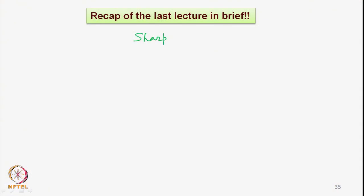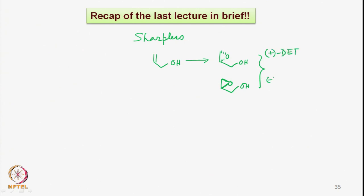We looked at how the mnemonic device allows the allylic alcohol to be oriented in a particular fashion. Depending on whether it is L-plus DET or D-minus DET, we can get the corresponding epoxides and their orientation or stereochemistry. These are two epoxy alcohols that can form: this one based on plus-DET, that is diethyl tartrate, and this one from minus-DET. This is L-plus and this is D-minus.